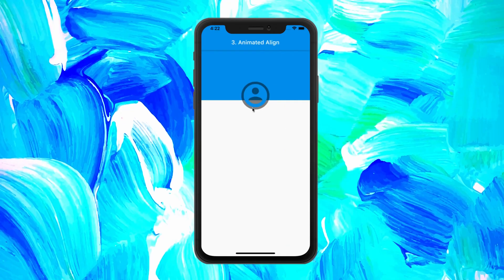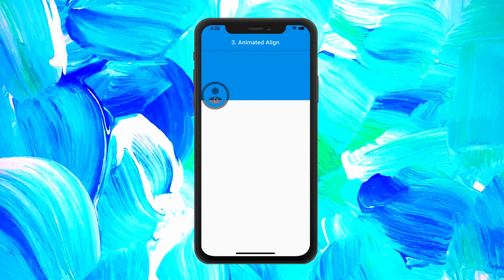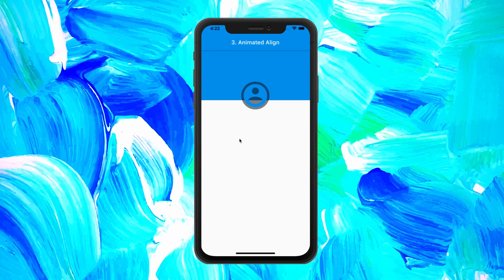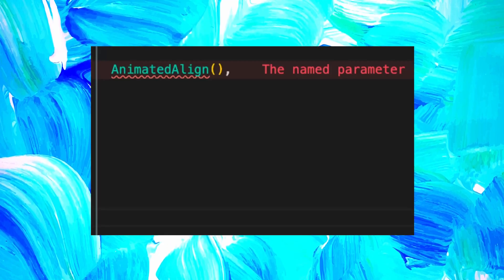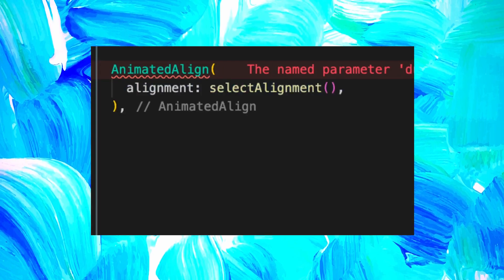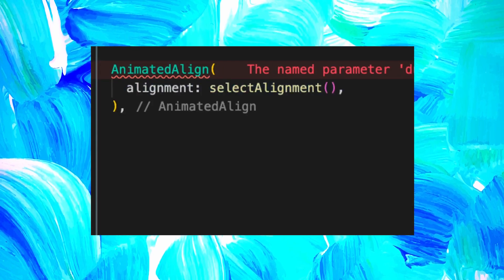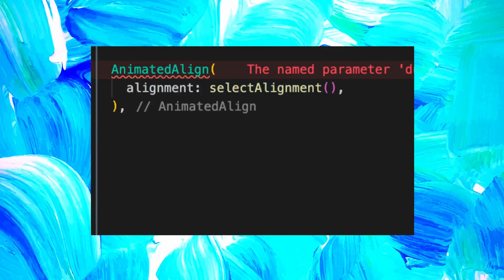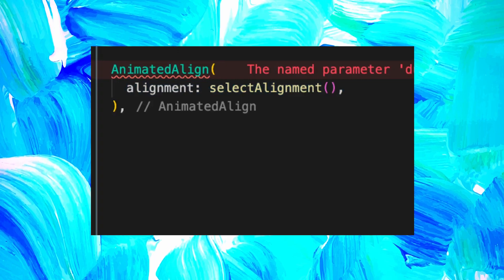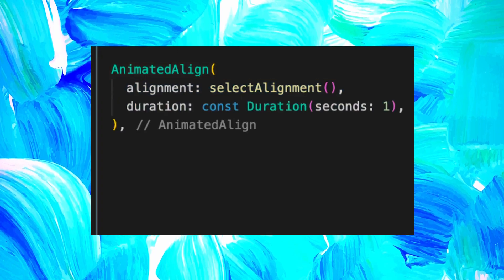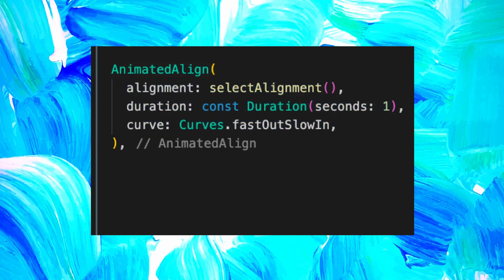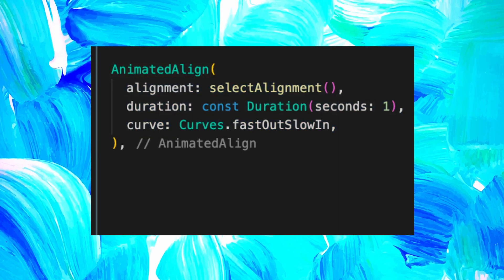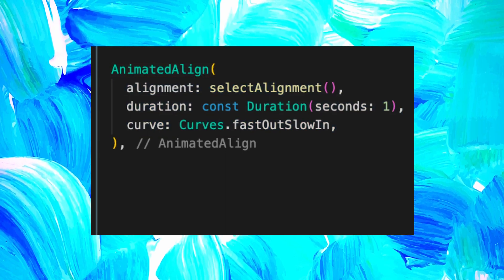For the next animation, it is a very simple one. It is called the AnimatedAlign and it looks just like this. First of all, you will need to have the alignment. For this one, we created a function that will select the current alignment. We used a duration of one second. For the curve, it will be a FastOutSlowIn like we did previously.